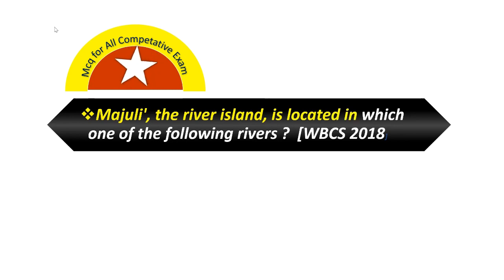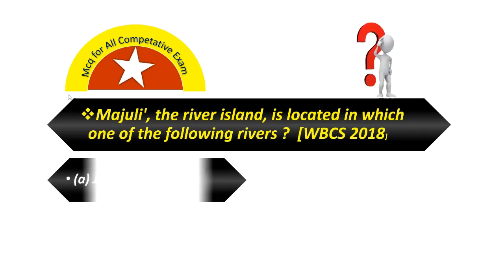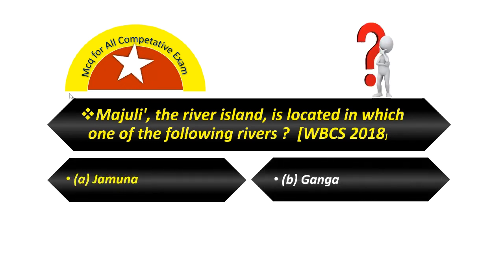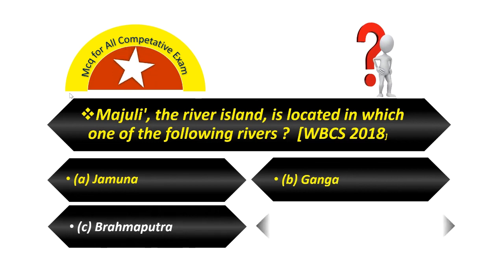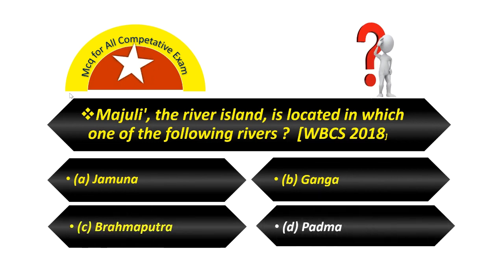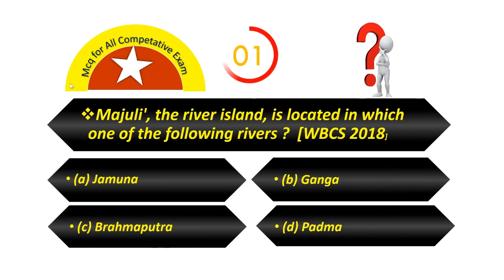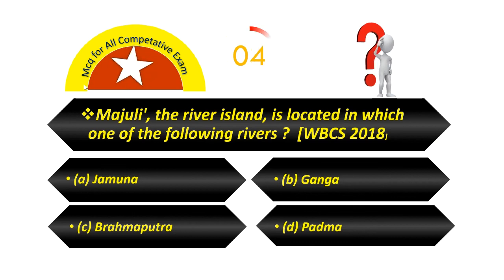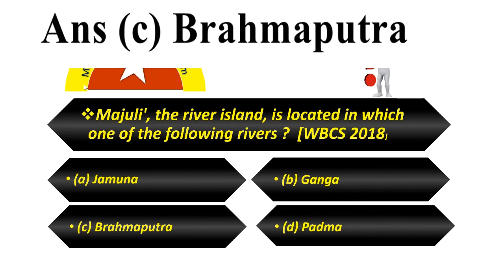Majuli, the river island, is located in which one of the following rivers? Option A — Yamuna. Option B — Ganga. Option C — Brahmaputra. Option D — Padma. Answer is Brahmaputra.